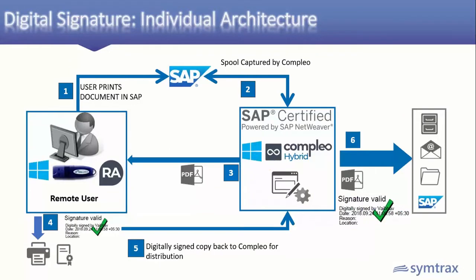Now I want to discuss the architecture for digital signatures — this is a distributed architecture. If you have different plant warehouses and signatures are distributed across different locations, you can use this architecture. The ERP user processes the document, it is captured in Compleo, then it routes to the respective authority intelligently. The authority can review the document and sign it using a dongle. If the authority doesn't want to review the document, an auto-signing option is available. Then the document is distributed automatically. The client software needs to be installed on the authority system and the dongle needs to be plugged in.